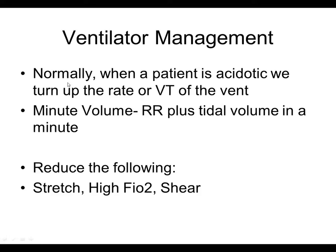Normally we have a pH of 7.35 to 7.40, we want our CO2 at 40, and our PO2 at 80 or better. That's a normal lung. These ARDS lungs are far from normal, so to expect those normal values from our pH and acid-base status is just unreasonable. We have to lower our targets, and by doing that, we're reducing some of the things that cause damage.